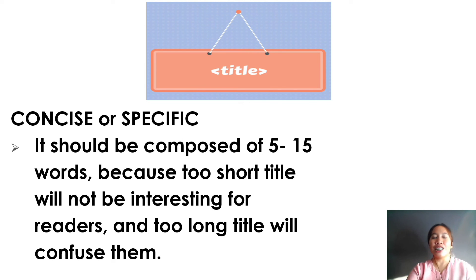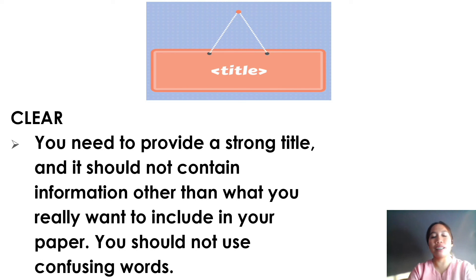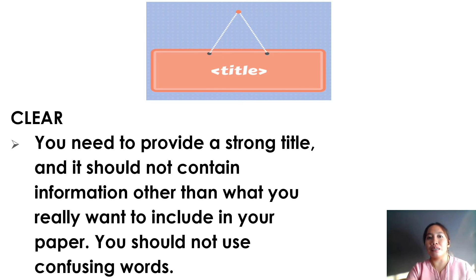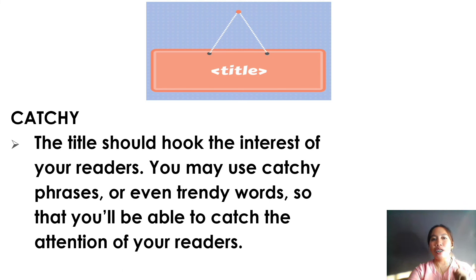Your research title should also be concise and specific, meaning it should be composed of 5 to 15 words, because a too-short title will not be interesting for readers and a too-long title will confuse them. Your title should not contain information other than what you really want to include in your paper, and you should not use confusing words. In a qualitative research title, you may use figurative words, but not so deep that readers cannot understand your meaning. In a quantitative research title, it is more direct to the point. Your title should also be catchy — it should hook the interest of your readers, and you may use catchy phrases or trendy words to catch their attention.